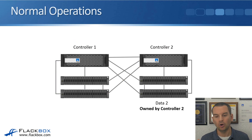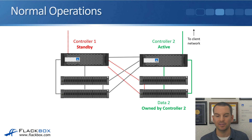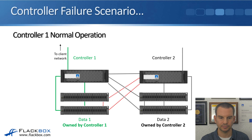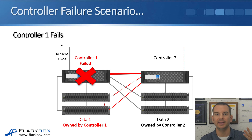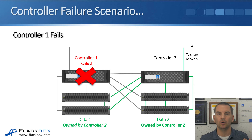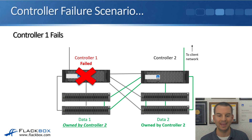Controller two also has its own data — Dataset two — owned and served by Controller two, with Controller one acting as the standby. If Controller one fails, Controller two stops receiving keepalives over the HA connection, realizes Controller one has gone down, and takes ownership of Controller one's disks and data. So after a failover, Controller two owns both Dataset one and Dataset two and serves both. Network connections also fail over to Controller two.